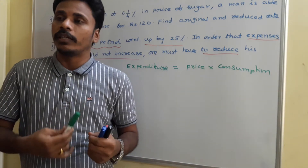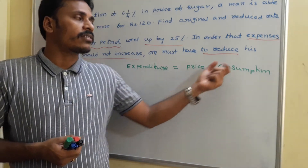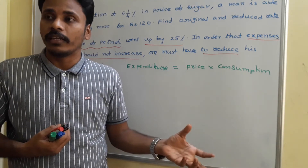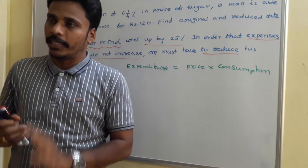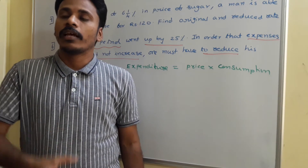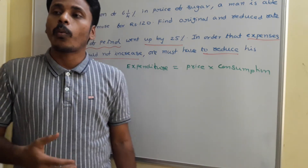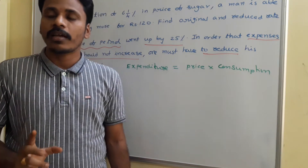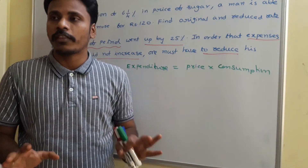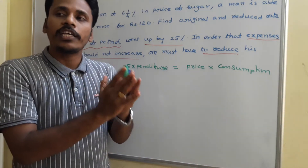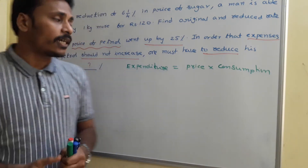If the price of petrol is 80 rupees per liter and I usually consume, say, 100 liters, what is the expenditure? It is 100 into 80 — 8,000 rupees. So my expenditure on petrol equals consumption into price per liter. Here the price is raised by 25 percent, and we need to analyze how much we need to reduce our consumption to keep the expenditure the same.